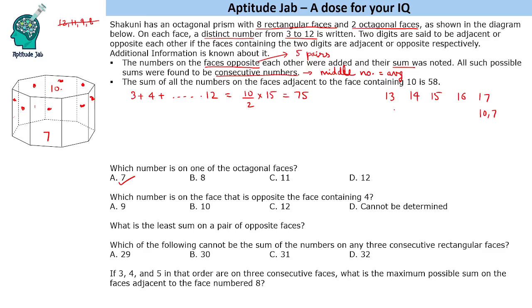Now we figure out how the sums 13, 14, 15, 16, 17 are distributed among the remaining numbers: 3, 4, 5, 6, 8, 9, 11, and 12. Starting with 13: 3 cannot pair with 10 (not available), so we try 4 and 9. For 14, we try 3 and 11. However, that leaves 5, 6, 8, 12 to form 15 and 16, but 5+8=13 and 5+12=17, so 3 and 11 for 14 doesn't work.